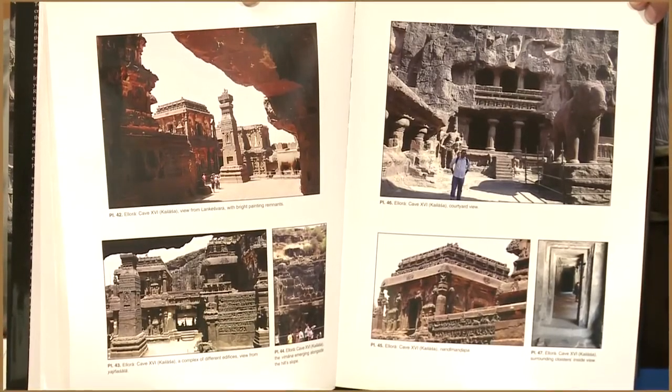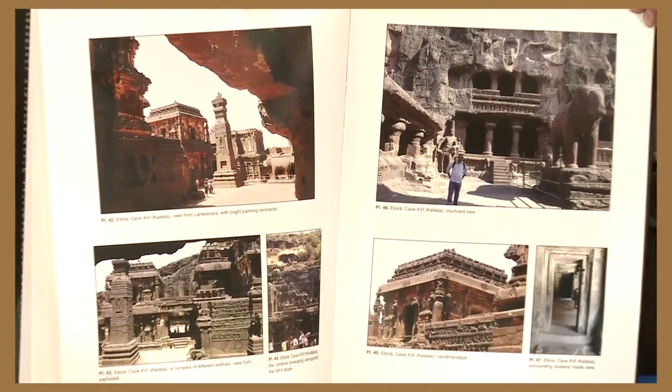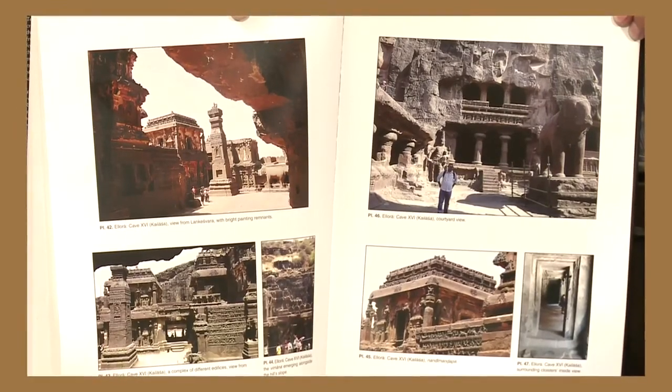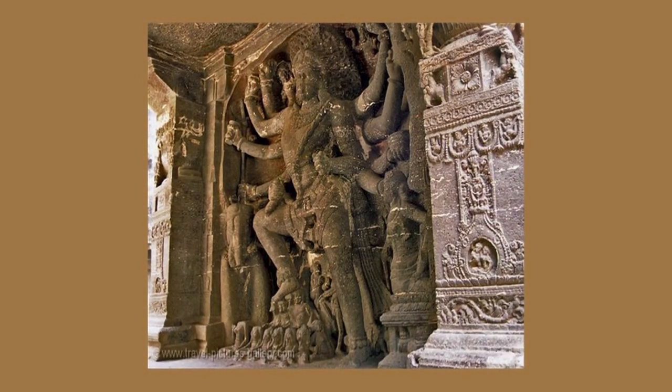Another beautiful rock-cut temple must be mentioned — the Kailashnath Temple at Ellora in Maharashtra. The Rashtrakutas built this beautiful rock-cut structure at Ellora. A hill was carved from the top to the bottom and shaped into a two-storied temple known as the Kailashnath Temple. Every part of the Kailashnath Temple is beautifully carved with sculptures, one of the most famous being the Mahishasuramardini.